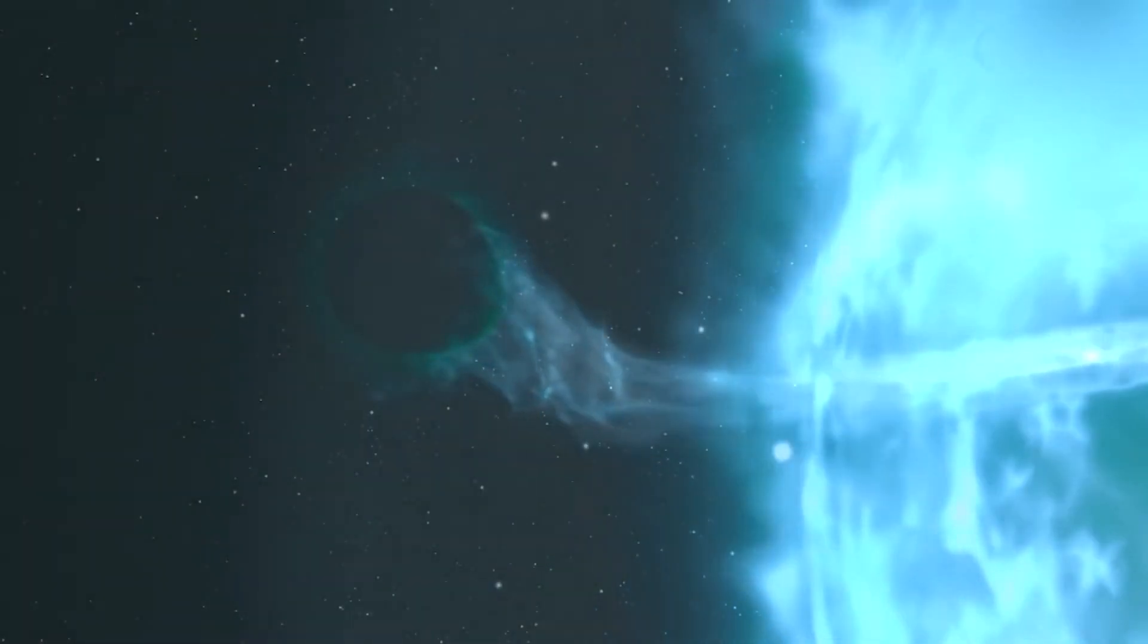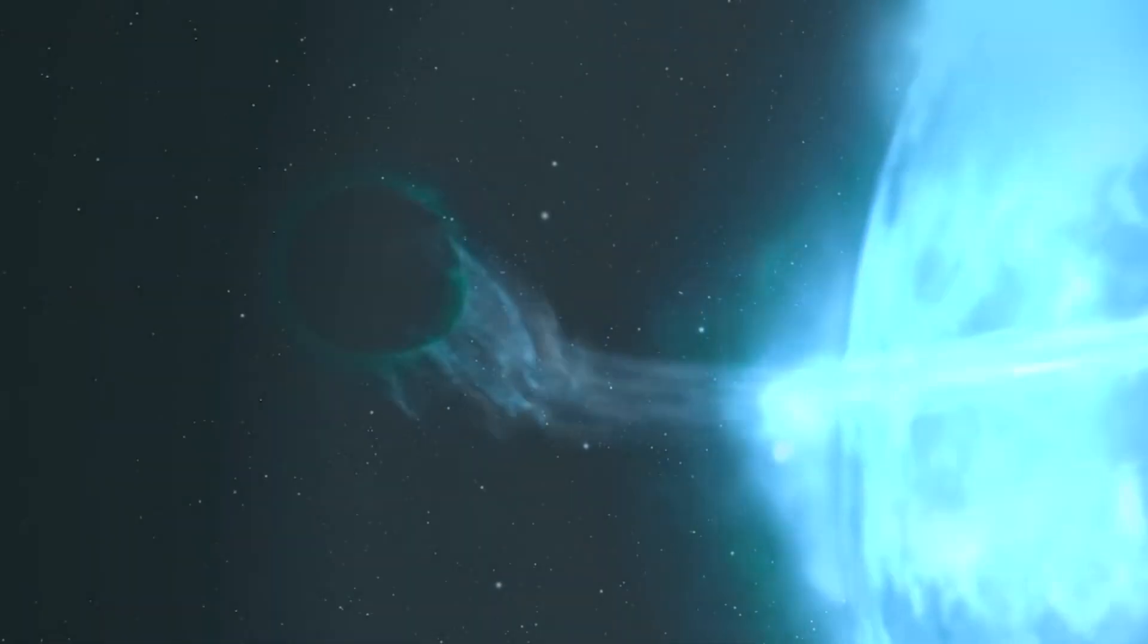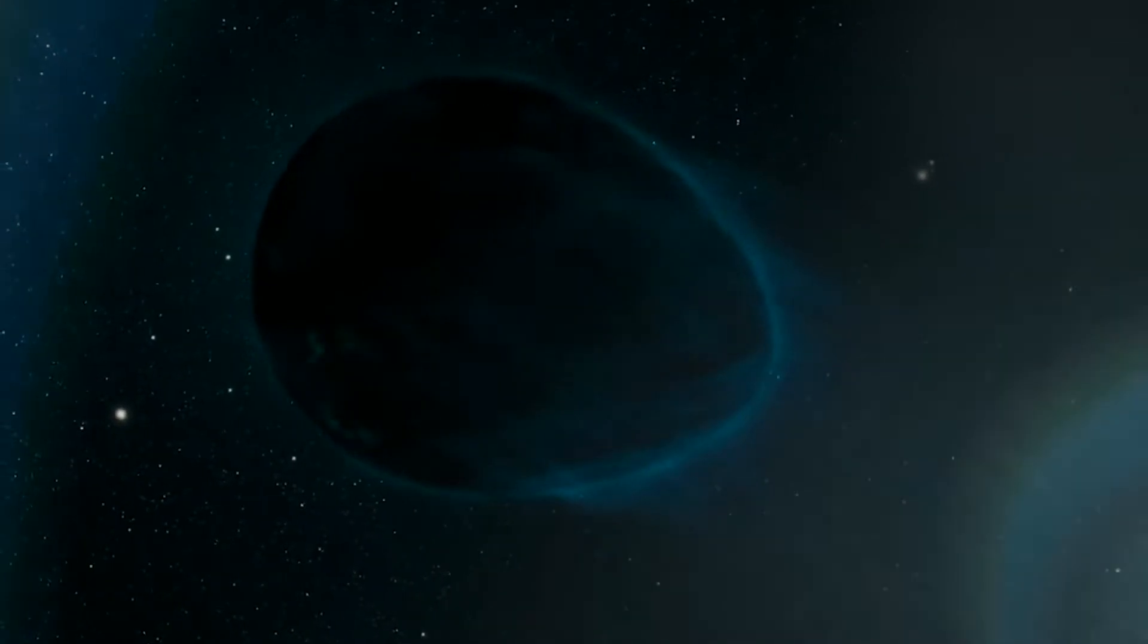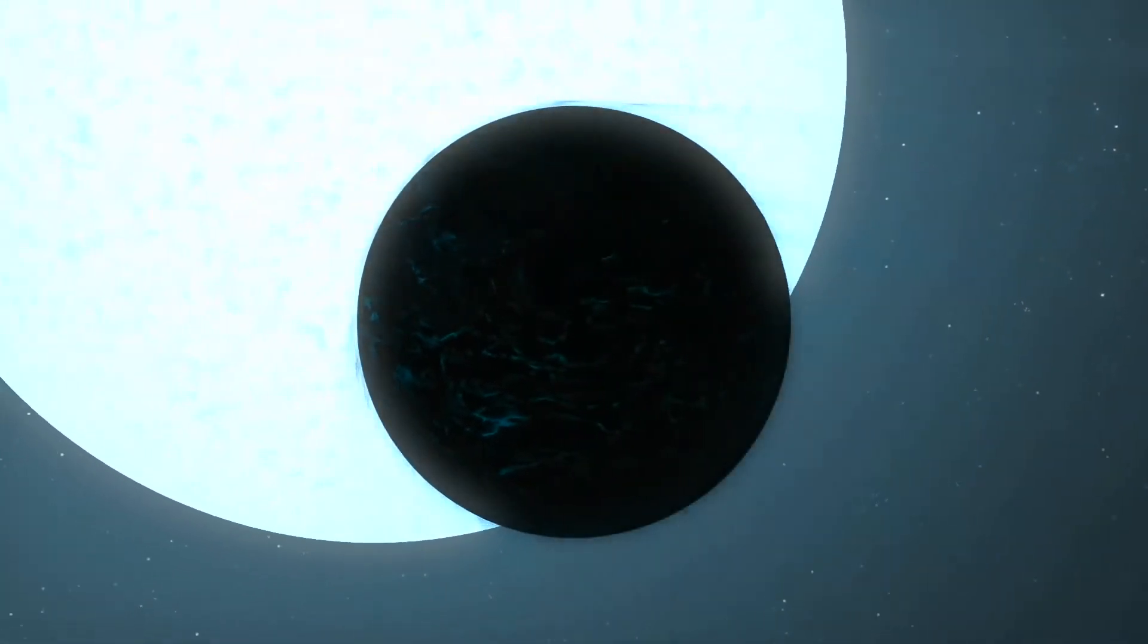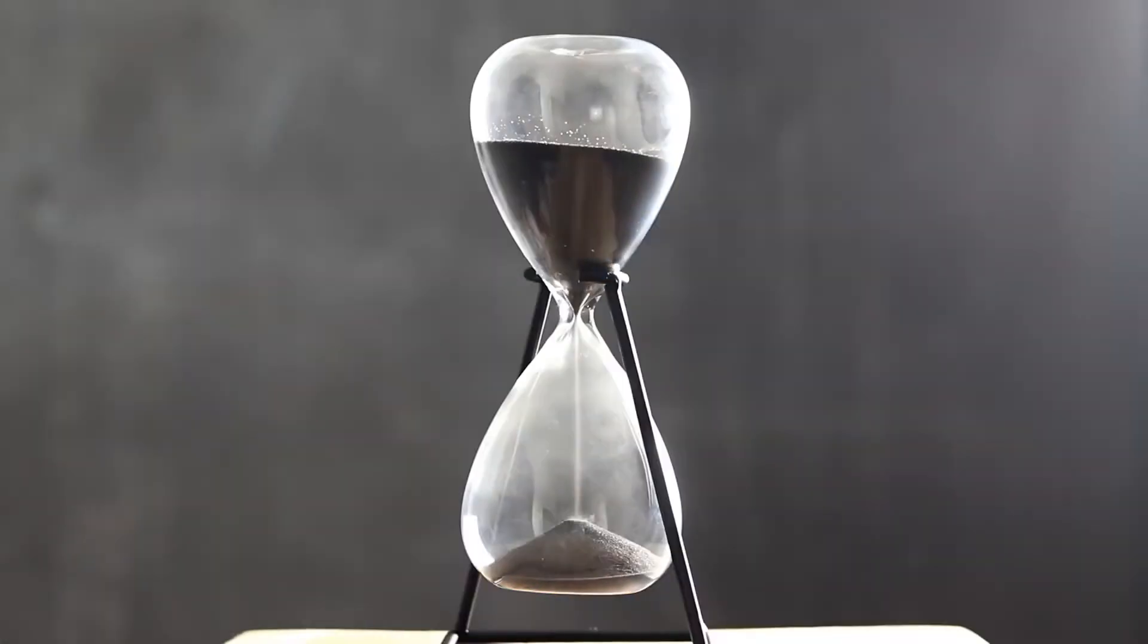Because Kelt 9b is just outside this Roche limit, and because it's being constantly bombarded by intense solar radiation, the planetary atmosphere is being blasted away at an incredible rate. As many as 12 million metric tons of material are blown off the planet into space by the solar wind every second. Every 10 million years, it will lose an entire Earth's worth of mass.